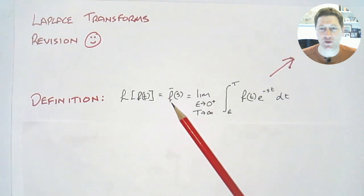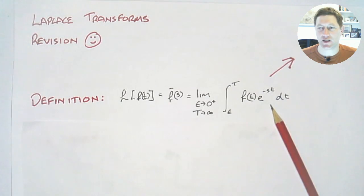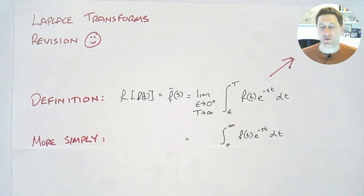We can write that more succinctly as our function f(s) with a bar over the top of it. So we've gone from a space t to a space s that we're working in. The definition has an integral with limits epsilon tending to zero from the positive side and t tending to infinity. So the limit from epsilon to t, our function f(t), and then we create the Laplace transform by multiplying our function with e^(-st) dt.